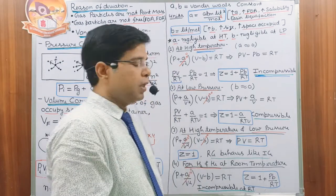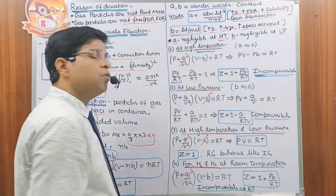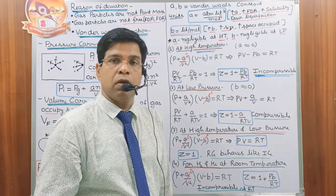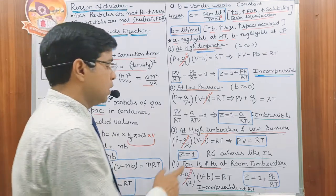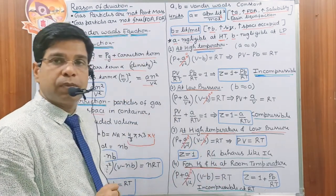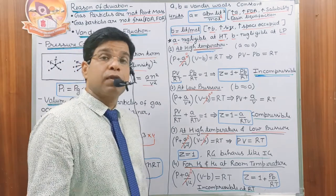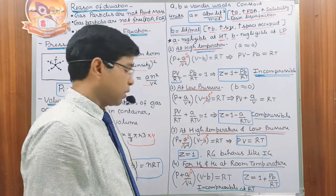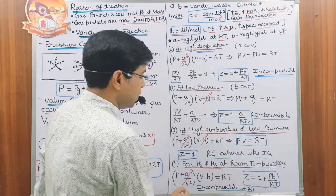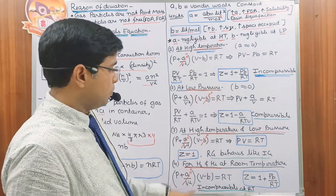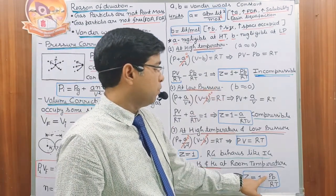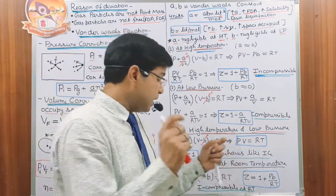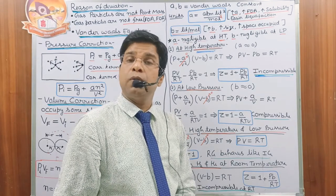We already know that at very high temperature and low pressure, every gas behaves like an ideal gas. For the fourth condition: hydrogen and helium are permanent gases — we cannot liquefy them because they have only a force of repulsion even at room temperature. Since their force of attraction is negligible at room temperature, Z = 1 + Pb/RT for them, meaning these gases are incompressible even at room temperature.